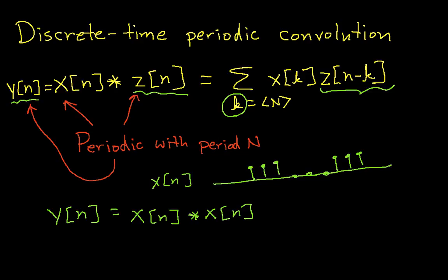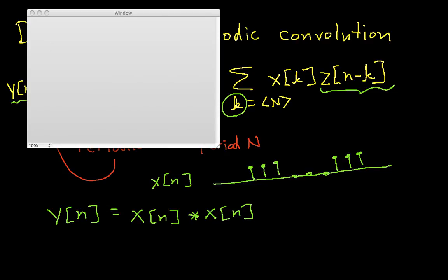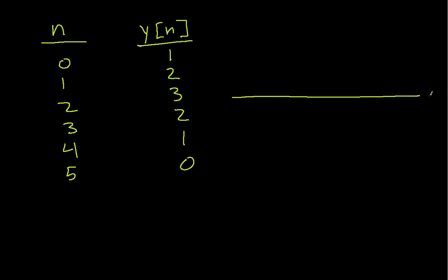So to summarize this, we had values of N and Y of N. So when N is equal to 0, Y of N was 1, 1, 2, 2, 3, 3, 2, 4, 1, 5, 0.